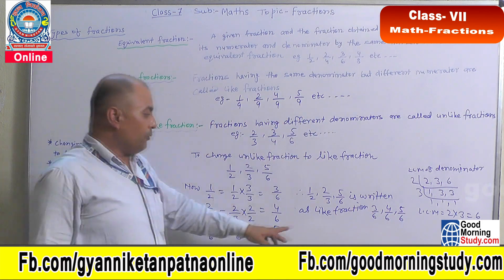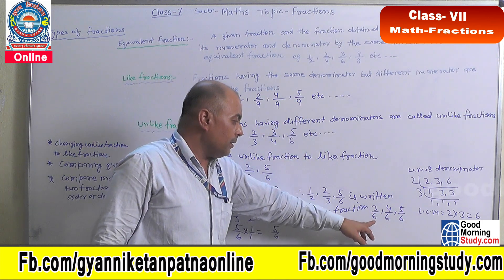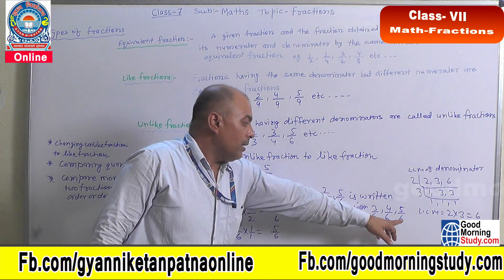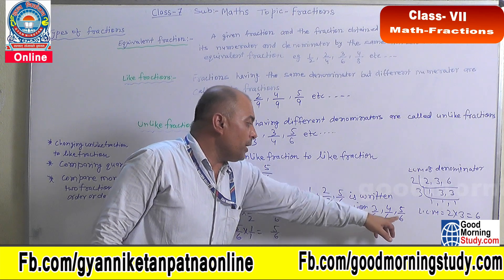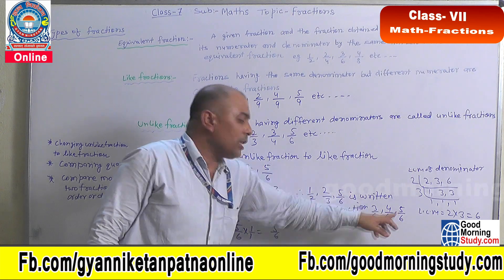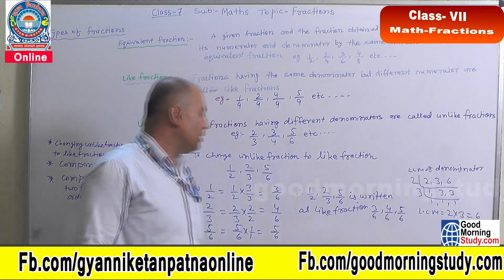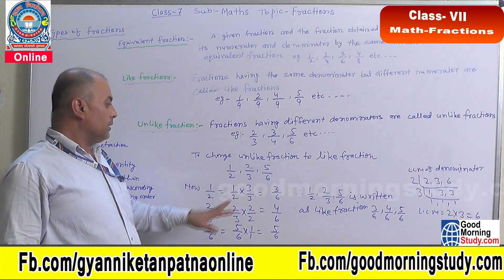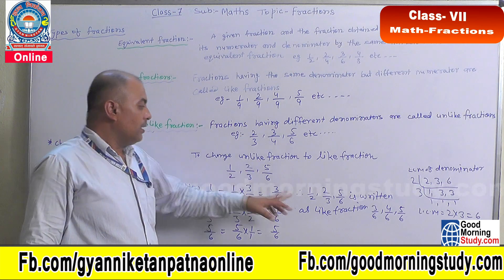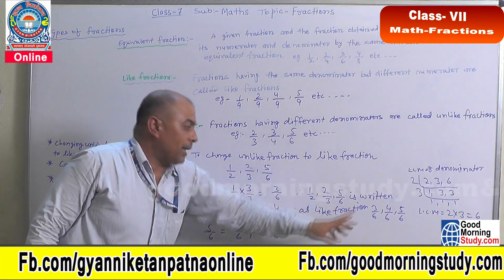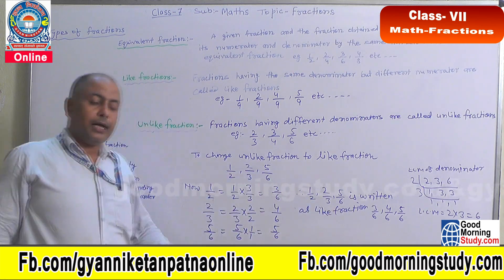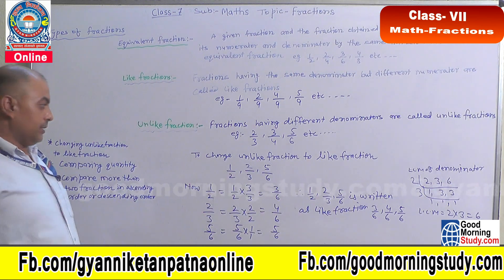We see that the denominator of all the fractions is now 6. So these fractions — 3 by 6, 4 by 6, and 5 by 6 — are called like fractions.